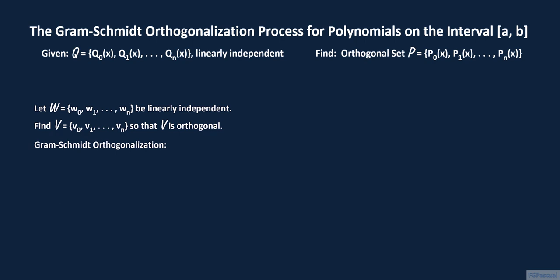If we are to obtain the set V from the set W using the Gram-Schmidt process, we start by setting the first element V sub 0 of V equal to the first element W sub 0 of W. We then define the next element V sub 1 as W sub 1, the second element of W, but we subtract the component or projection of W sub 1 along V sub 0. This projection is given by V sub 0 times the inner product of W sub 1 and V sub 0 divided by the inner product of V sub 0 with itself. We can easily verify that V sub 0 and V sub 1 are orthogonal by taking the inner product of V sub 0 with V sub 1.